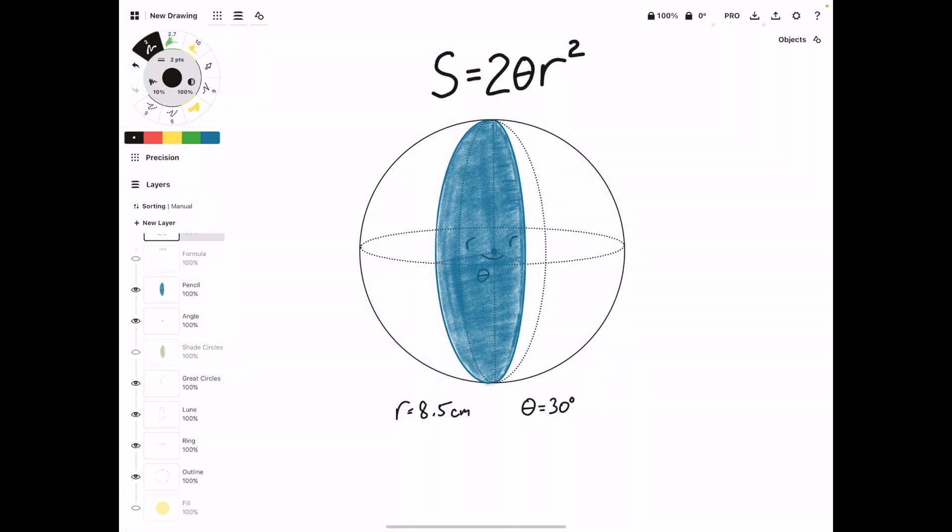I also wanted to point out that this formula for the surface area of a loon requires that the angle value be in radians.